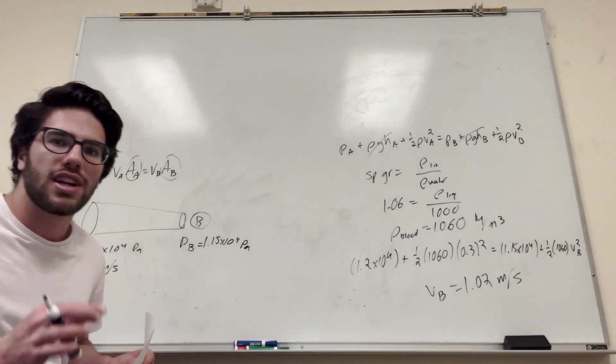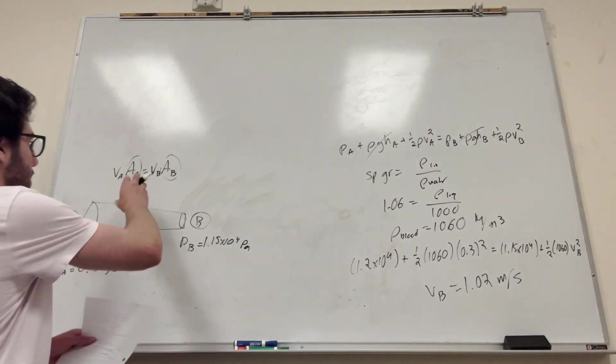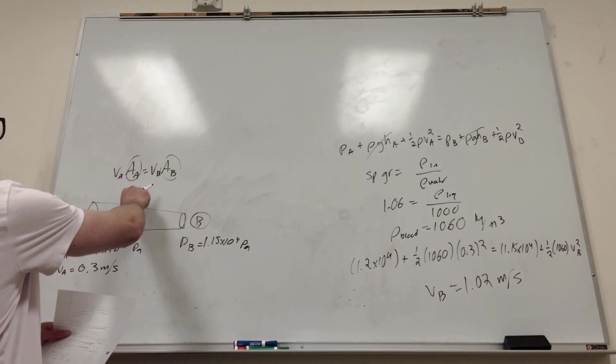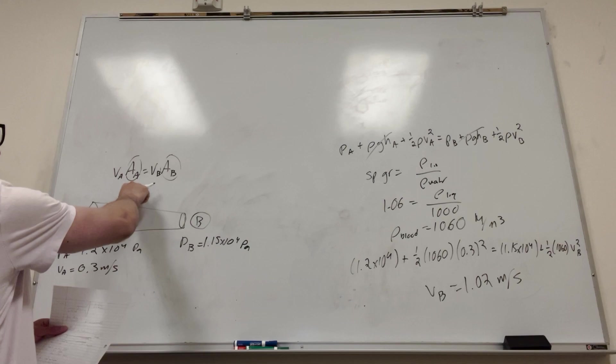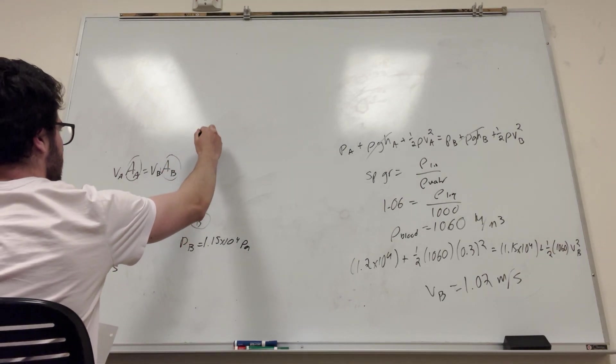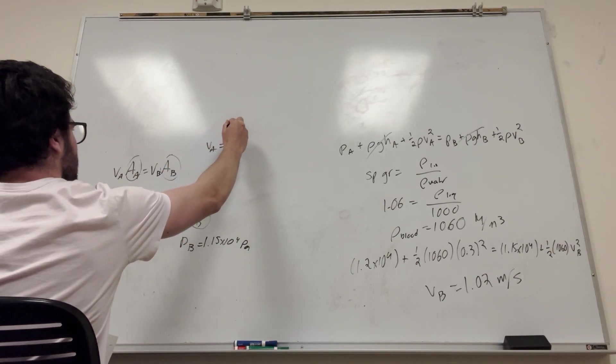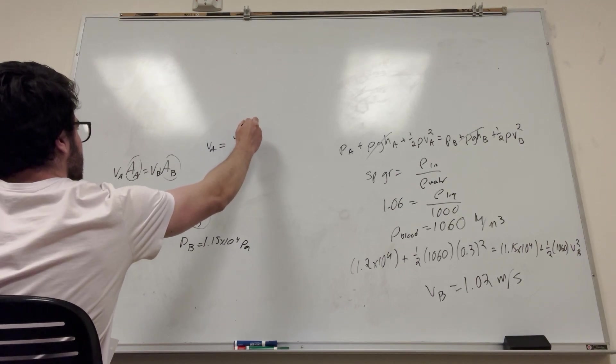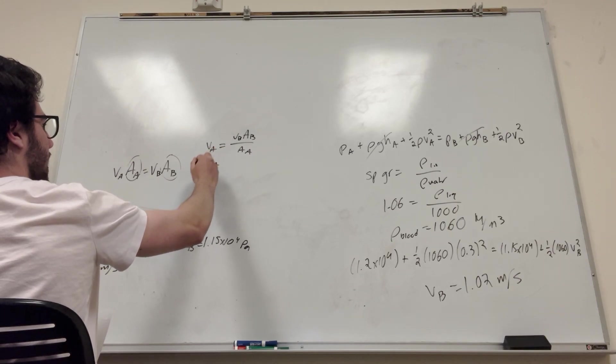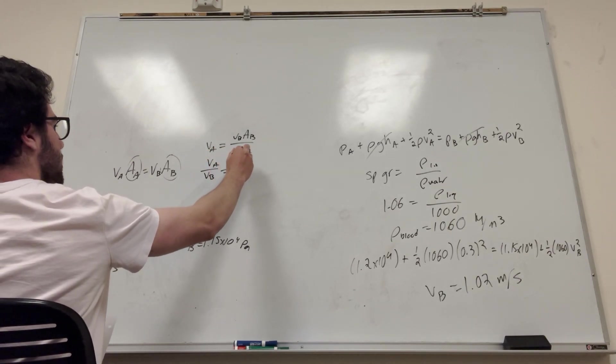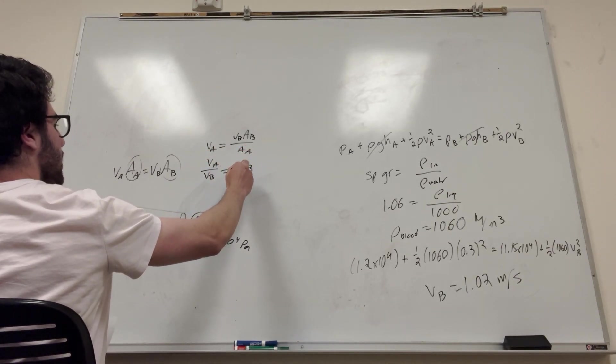So let's do that. You're going to see how much, like what relative size B is to A if you get A over B. So what you can do is we can go ahead and divide area of A on this side. So you're going to get V of A is equal to VB area of B over area of A. Then you're going to divide by velocity of B. So it's going to be velocity A over velocity B is equal to area of B over area of A.